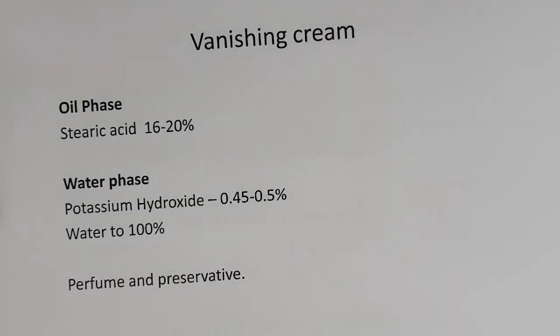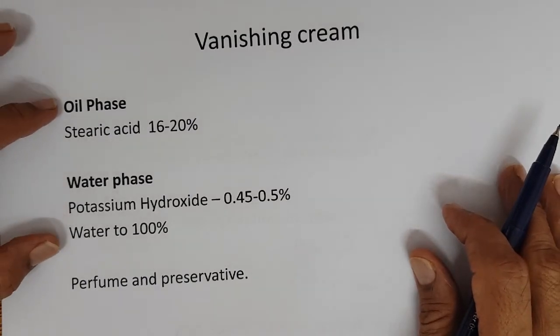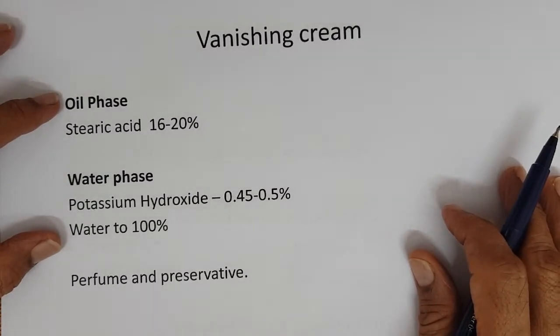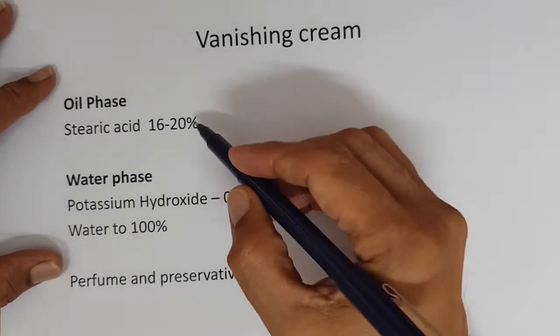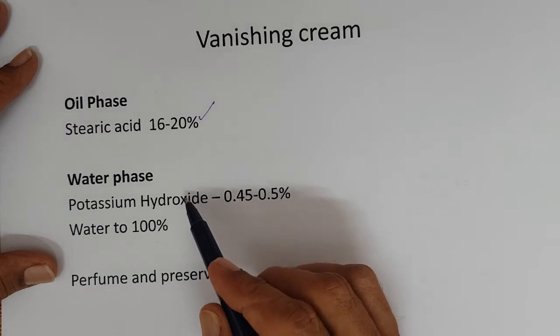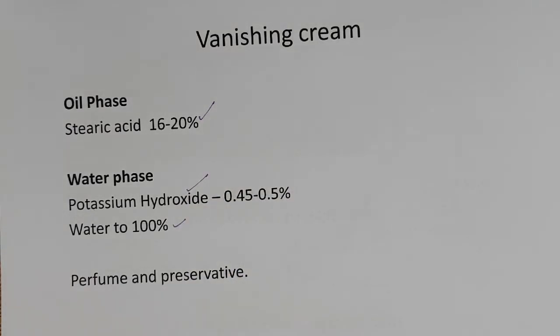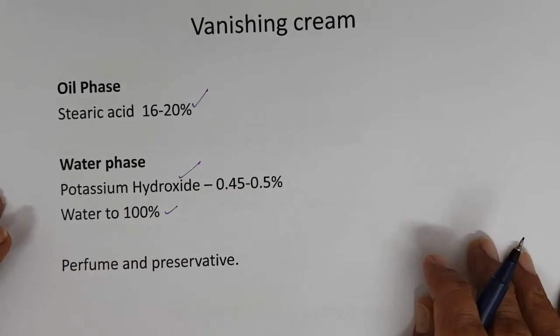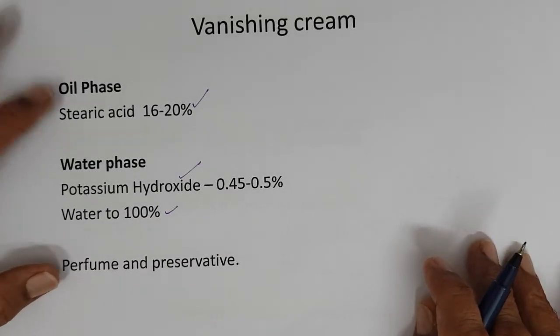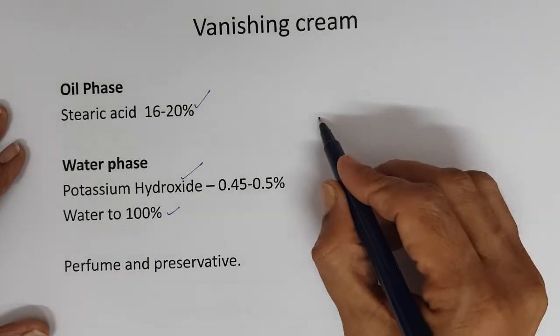Vanishing Cream broadly - the skeleton of the Vanishing Cream formula is the main oil phase, stearic acid is the main oil phase. Potassium hydroxide and water, of course the water phase. This is the skeleton of Vanishing Cream base.